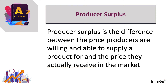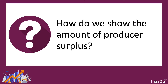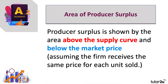Producer surplus is the difference between the price that the supplier, the grower, the manufacturer is willing and able to supply a product for, and the market price they actually get in the market. Producer surplus is shown by the area above the supply curve and below the market price, assuming that the firm receives the same price for each unit sold — that's a simplifying assumption.